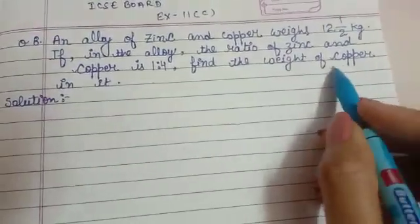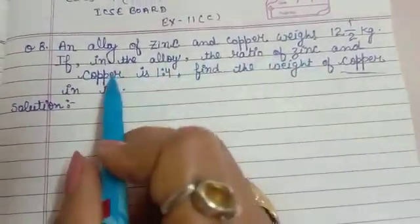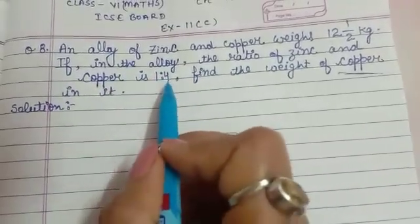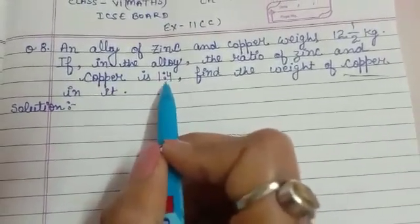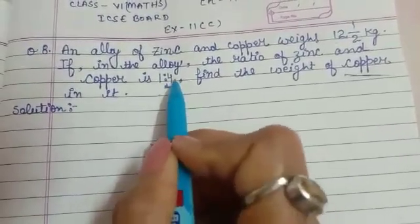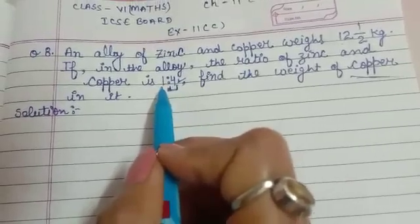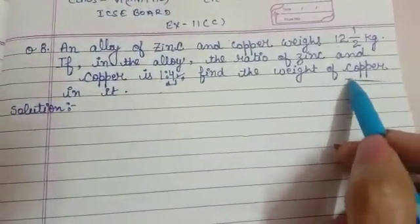We have to find the weight of copper. The ratio of zinc and copper is 1:4, so it means the copper is in 4 parts and we have to solve only part 4. We have to only solve the copper part, no need to solve zinc because the question is asking about copper only.